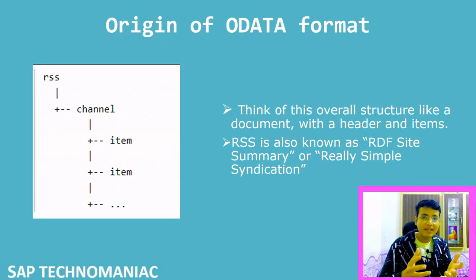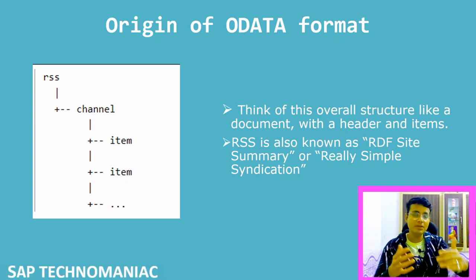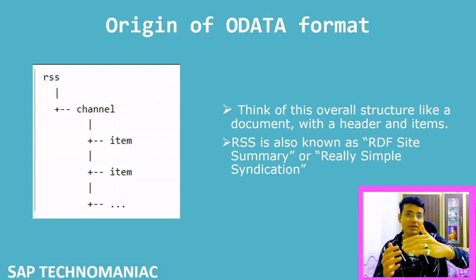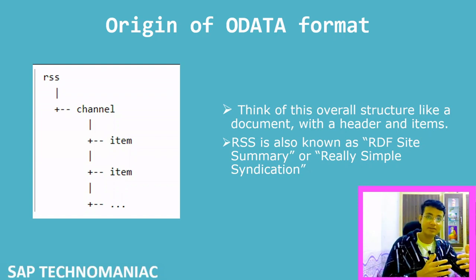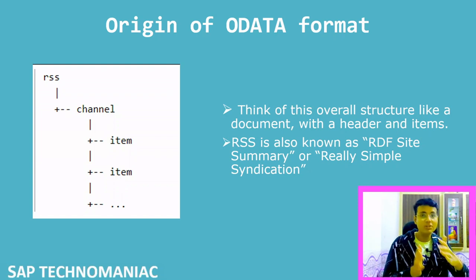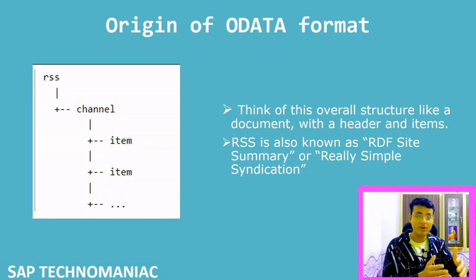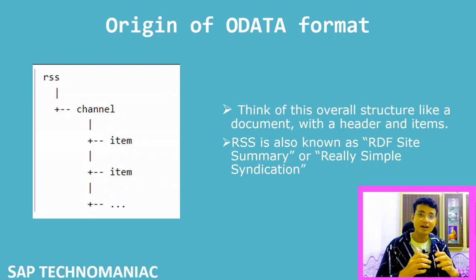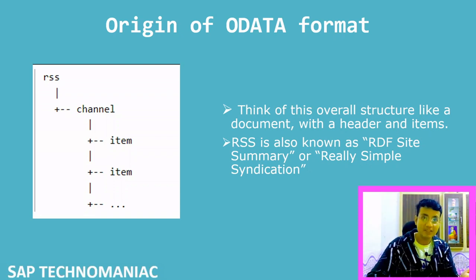This RSS format has one root node, then channel, then item. We need that kind of format because we want to display sales orders, then sales order items, then products — we want to display our data information in the same hierarchical way.